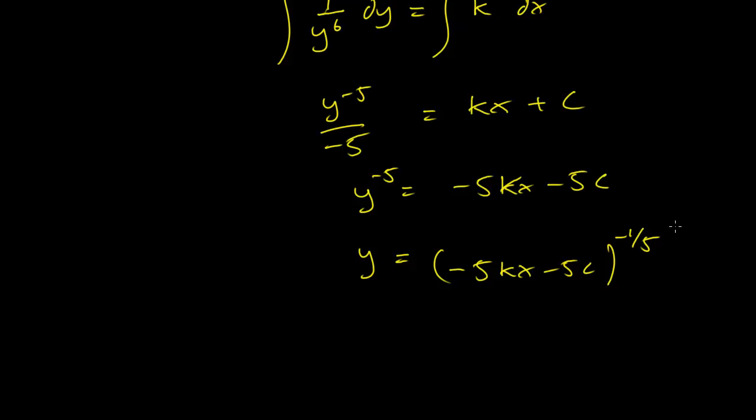So again, we have two parameters because this was a second order equation to begin with, so don't be afraid. We can actually make things a bit simpler by just subsuming the constants into k and c, so you can write this down as (kx + c) raised to the -1/5 power, and that's the solution of our differential equation.